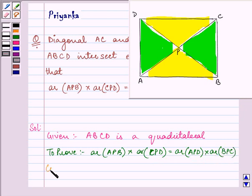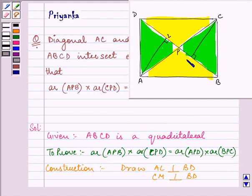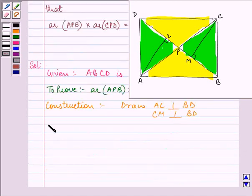For that we need to have a construction. We need to draw AL perpendicular to BD and CM perpendicular to BD, like this.